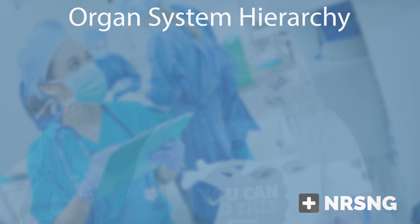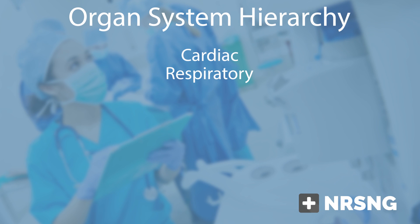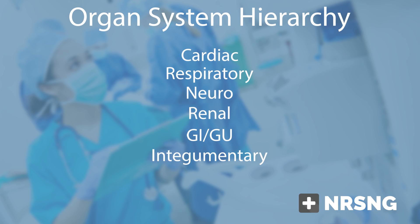In general, I recommend the following organ system hierarchy when learning medications, side effects, and considerations: start with cardiac, then respiratory, neuro, renal, GI/GU, integumentary, and lastly musculoskeletal. This keeps you focused on the ABCs. If you forget that steroids cause soggy bones or osteoporosis, that is far less detrimental to your patient than forgetting that steroids will raise blood sugars or depress the immune system.